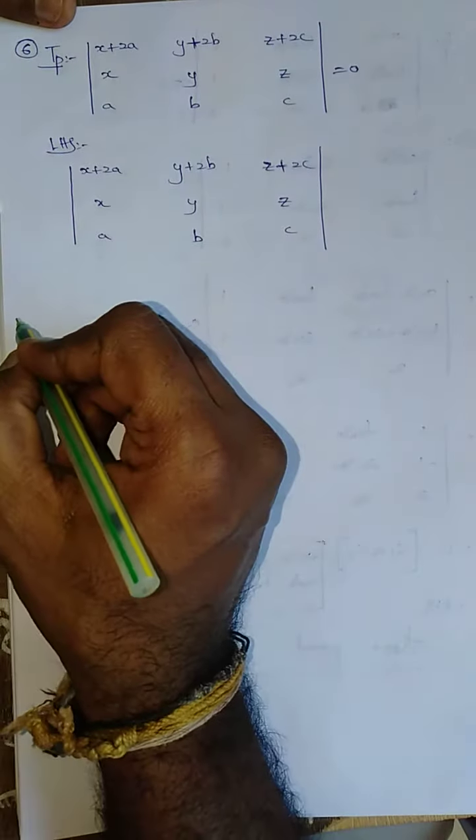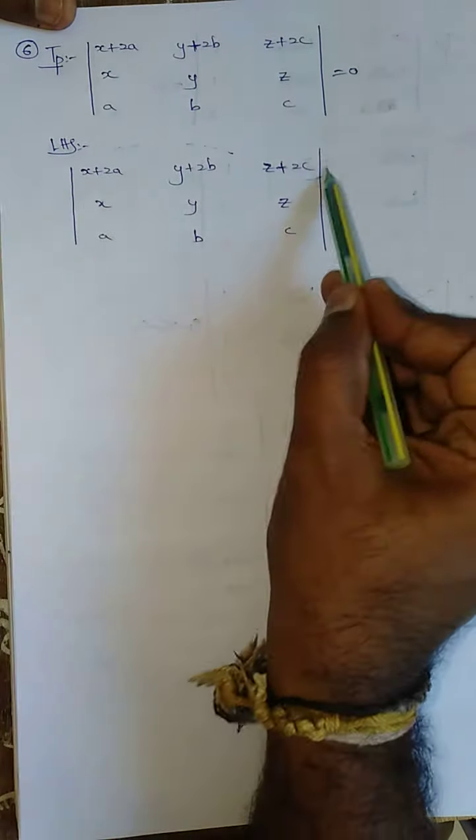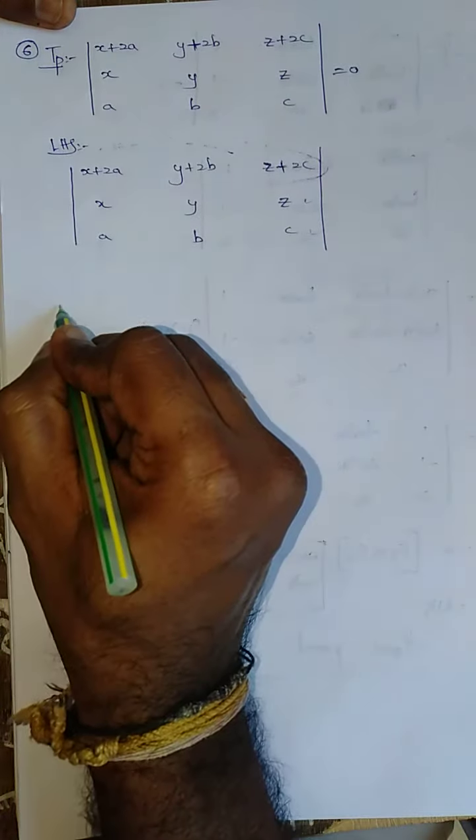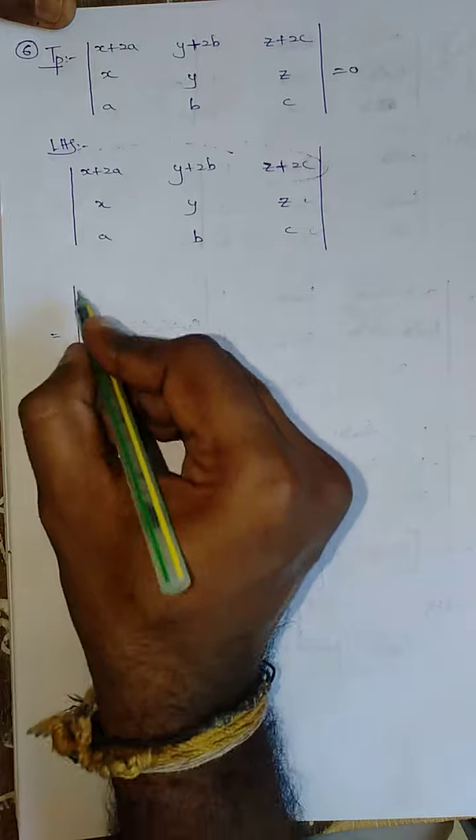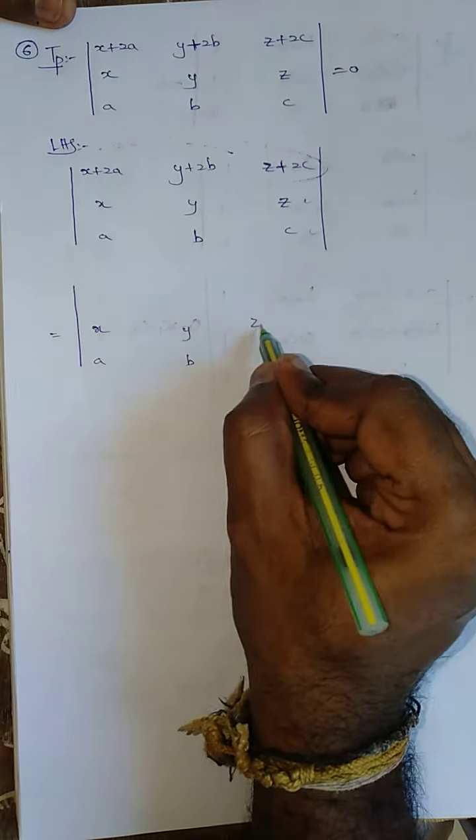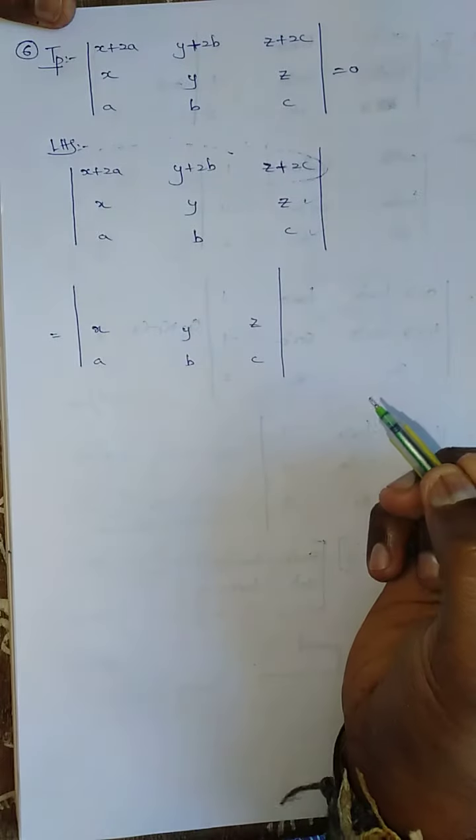So, the simple method is nothing but I am going to change R1 alone. I am going to change R1 alone, there is no change in R2 and R3. So, write R2 and R3 as it is. How I am going to change R1?